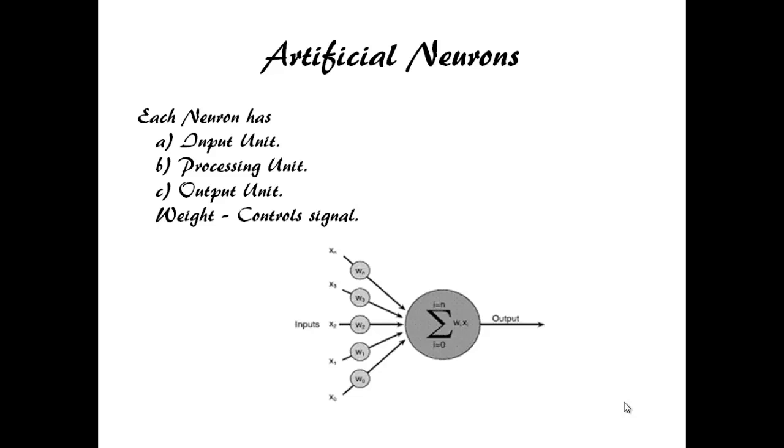Input is fed into input unit where weight is multiplied by input values then summed up. So it produces x1 w1, x2 w2, x3 w3 till xn wn.